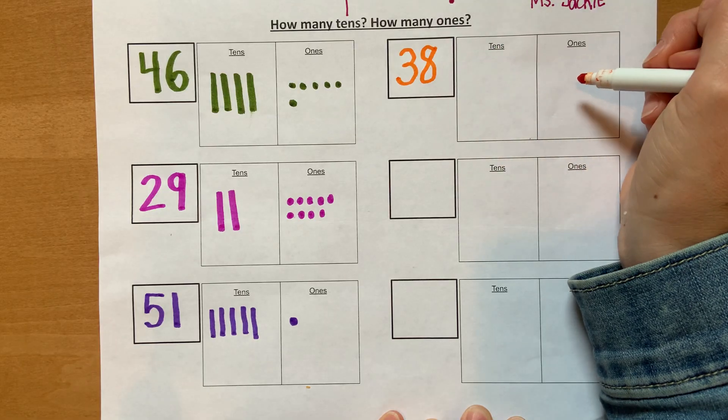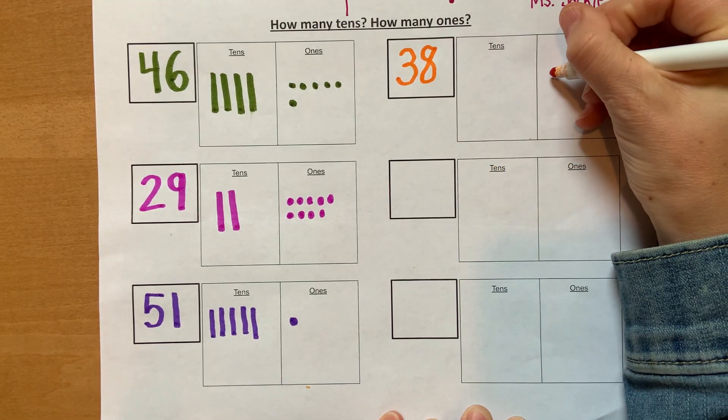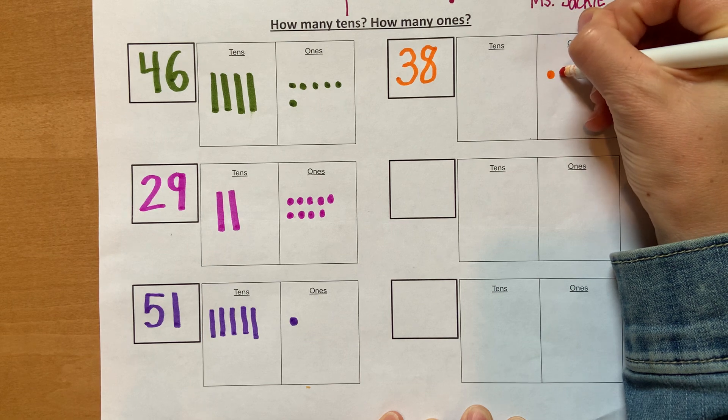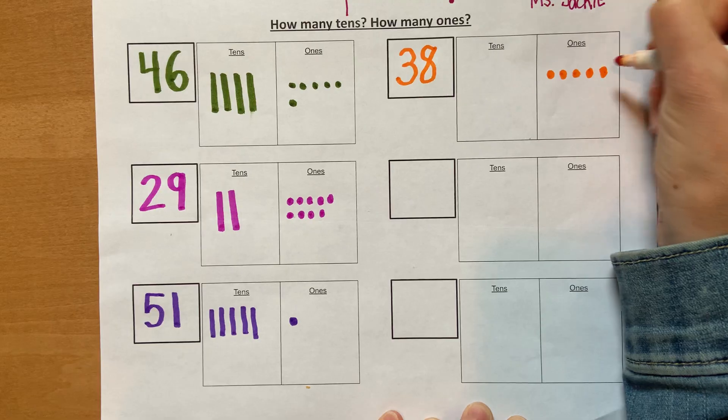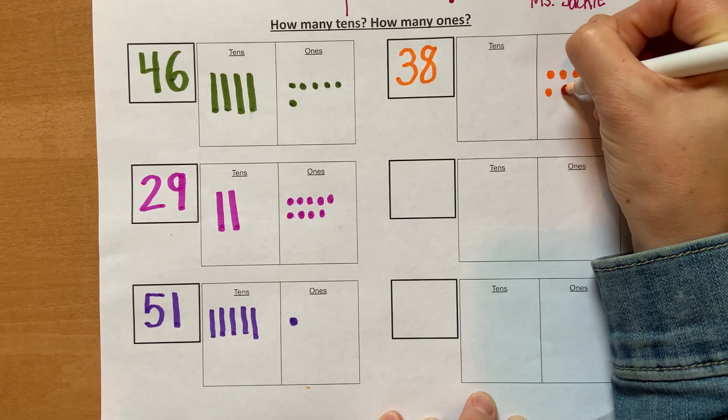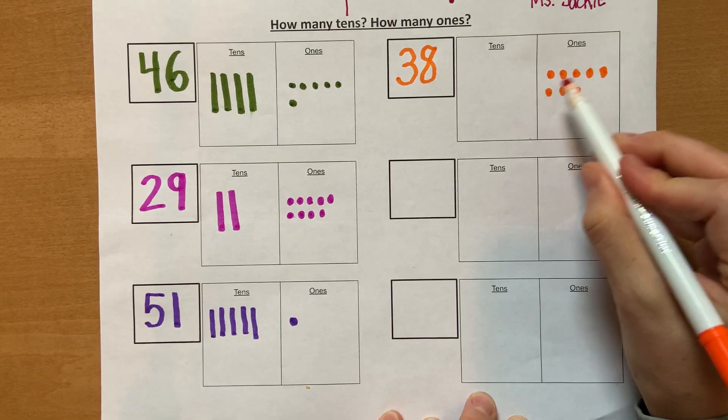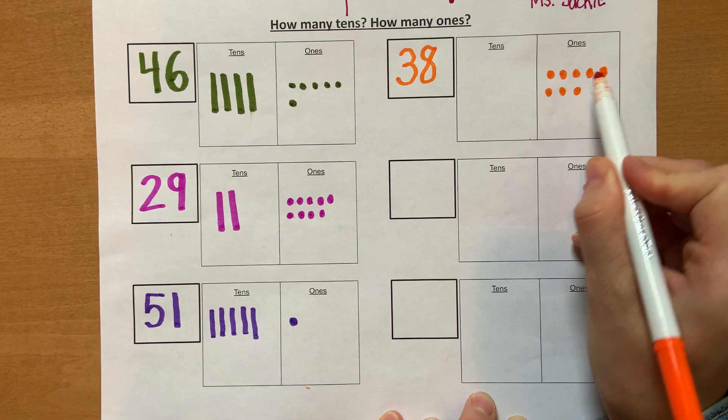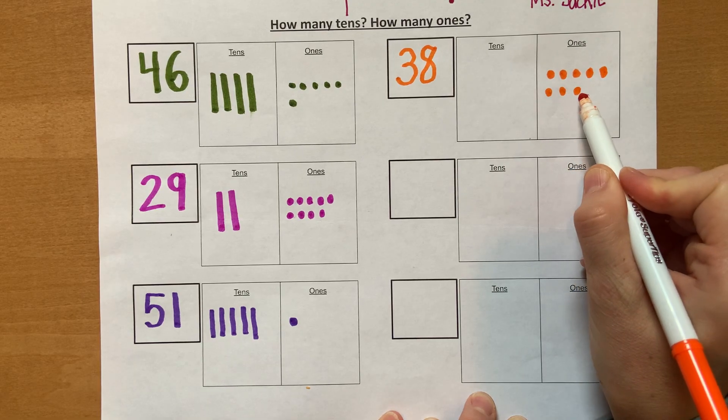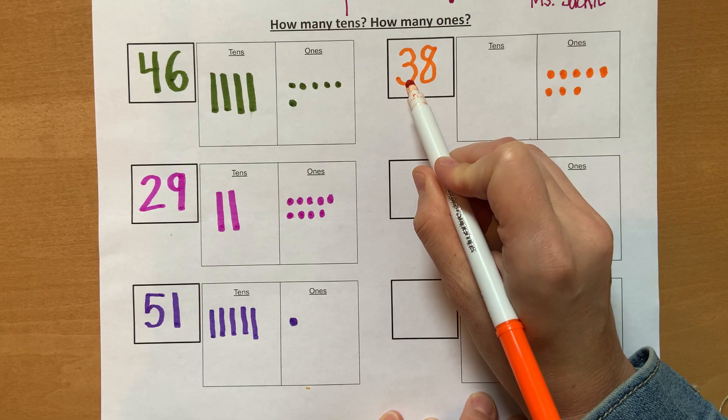I'm going to do my 1s first. I have 8 1s: 1, 2, 3, 4, 5, 6, 7, 8. Okay, I have 8 1s. I might want to check again: 1, 2, 3, 4, 5, 6, 7, 8. Okay, definitely have 8.